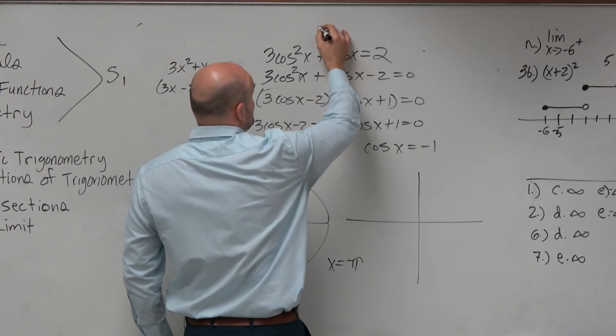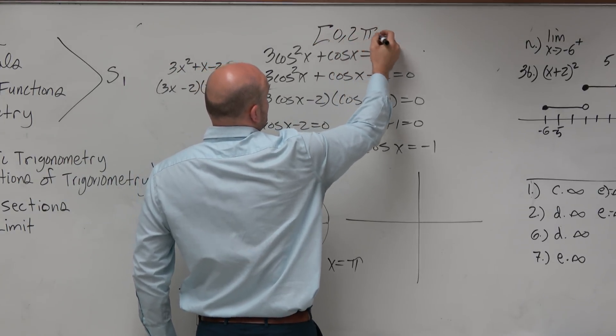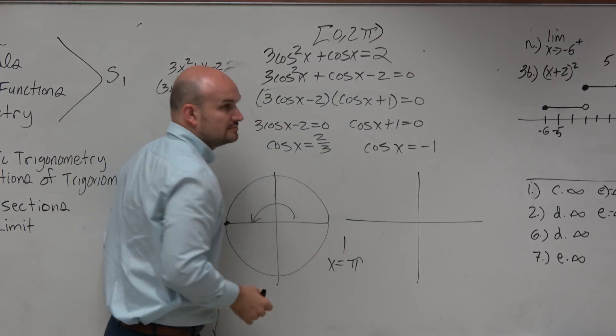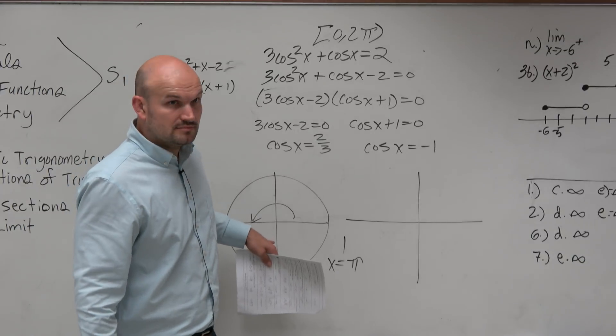Because our constraint, I'm sorry, I forgot to write this. The constraint is between 0 and 2 pi. But there's only, so right now we have one answer. One answer that works. Right? Yeah.